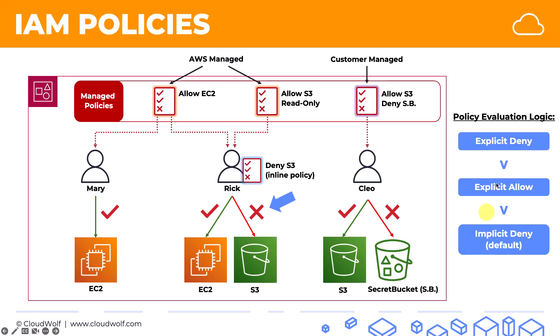But if there is an explicit deny anywhere — even one explicit deny attached to a profile — it will always override the explicit allows. So like in this case, there's an allow but there's also an explicit deny. Even if there are five explicit allows and one explicit deny for S3 across three different policies, the explicit deny will override all of them. One explicit deny is sufficient to override all explicit allows.